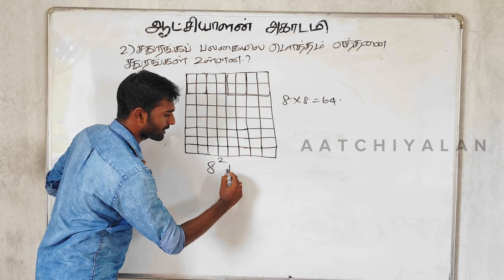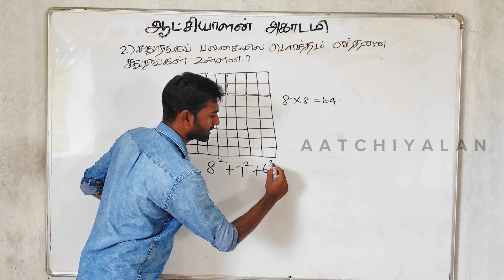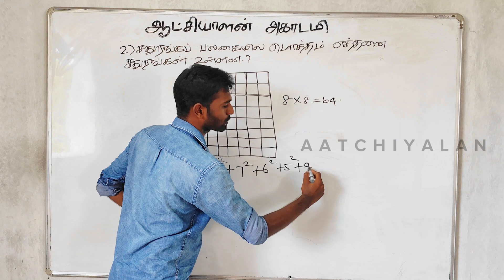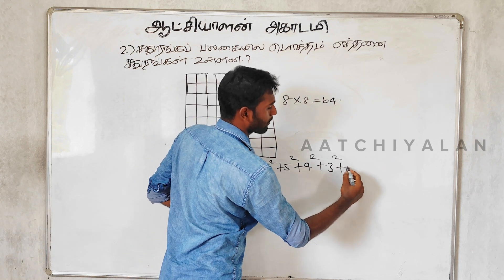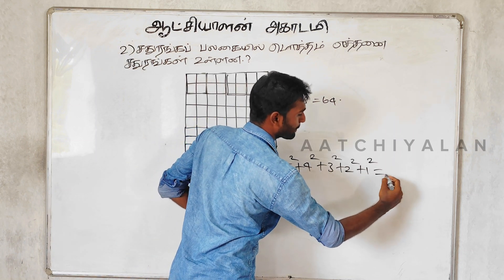8 squared, plus 7 squared, plus 6 squared, plus 5 squared, plus 4 squared, plus 3 squared, plus 2 squared, plus 1 squared.